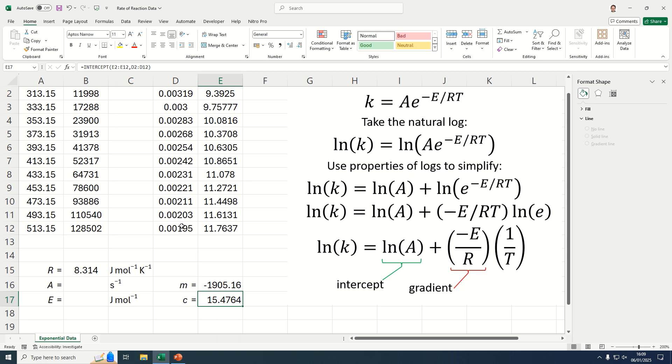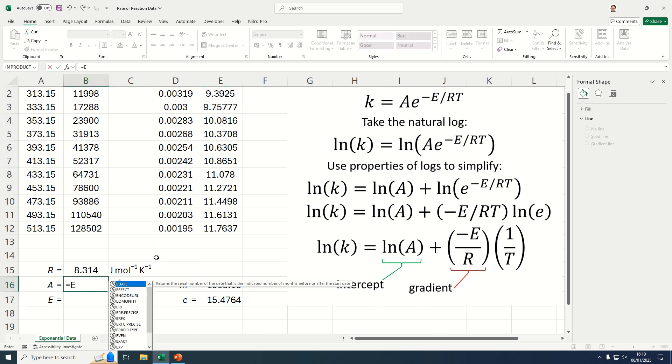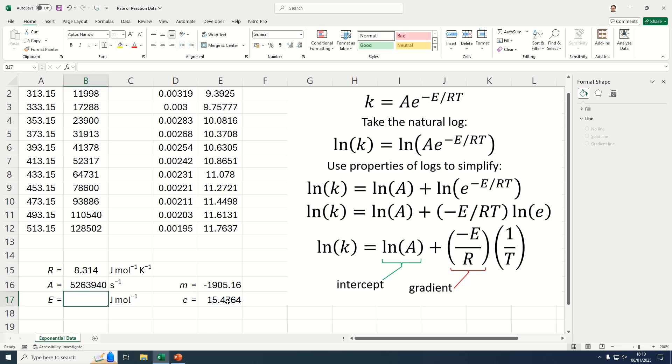So we know that the intercept is equivalent to natural log of A. So to get A we're simply going to do EXP of that value, close the brackets, and that is our pre-exponential factor.